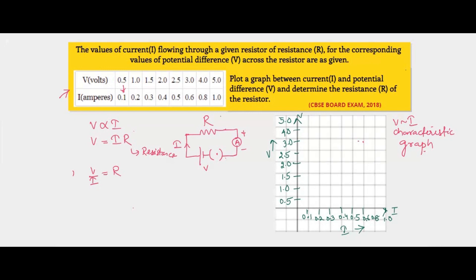When the voltage is 0.5 V, the corresponding current was 0.1 A — so we plot the point (0.5, 0.1). Then (1, 0.2), (1.5, 0.3), (2, 0.4), (2.5, 0.5), (3, 0.6), and (4, 0.8). All these points are plotted on the graph.